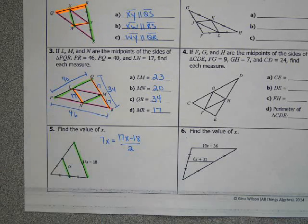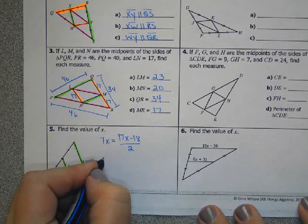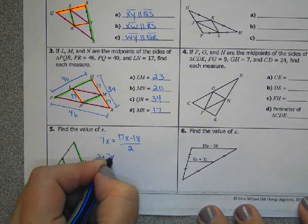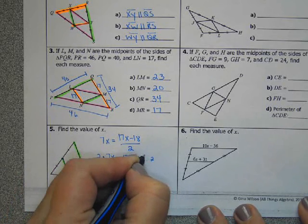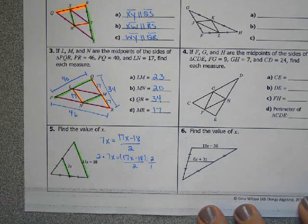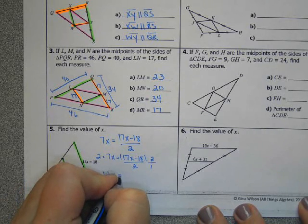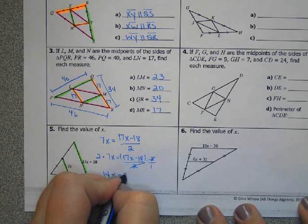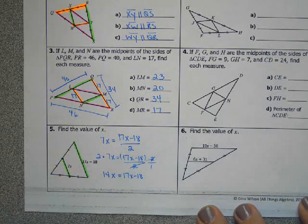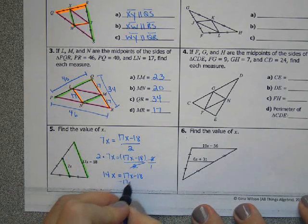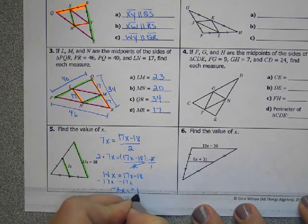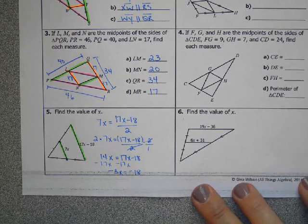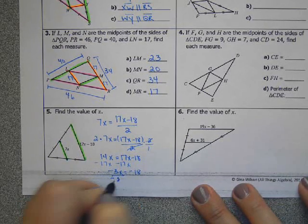So in order to undo division by 2, we multiply both sides by 2. So 2 times 7X equals 17X minus 18 divided by 2 times 2. So 14X equals, and then the 2's cancel out, we're left with 17X minus 18. We can subtract 17X. You'll get negative 3X equals negative 18. Divide by negative 3. And we know that a negative divided by a negative is a positive. X will be 6.